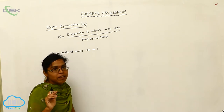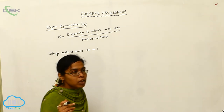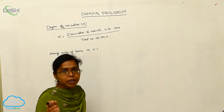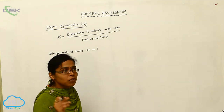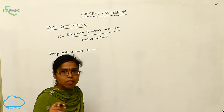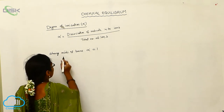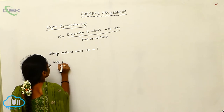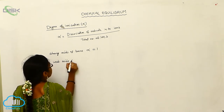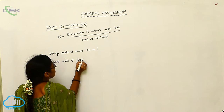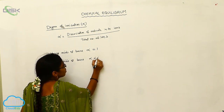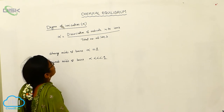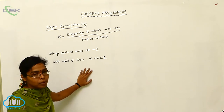For weak acids and weak bases, they do not give a complete number of ions. Therefore, alpha is less than 1. This is the key distinction between strong and weak acids and bases in terms of degree of ionization.